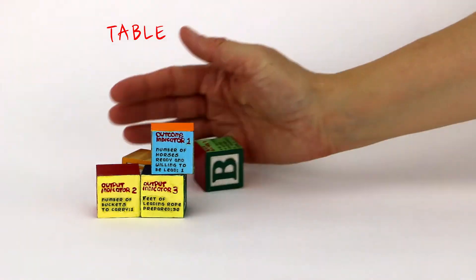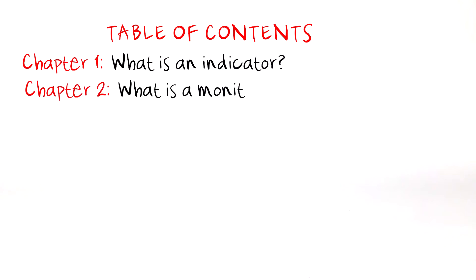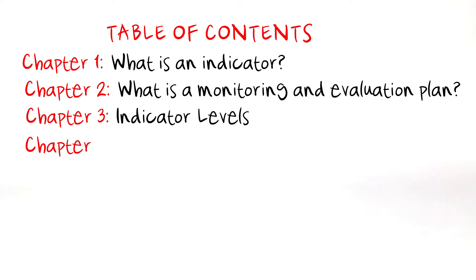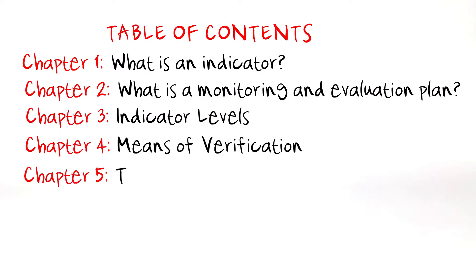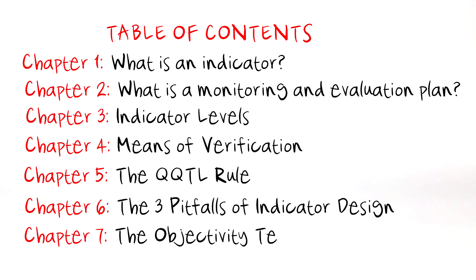We're hoping to shed a little light on the process through defining what an indicator is and what a monitoring and evaluation plan is, through looking at how indicators work with different project elements in a log frame, and how means of verification relate to indicators, by describing the QQTL rule for indicator design, by revealing the three pitfalls of indicator design, and through sharing a recipe for the objectivity test.